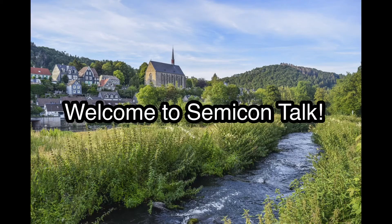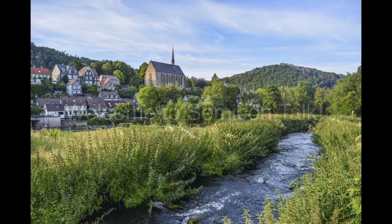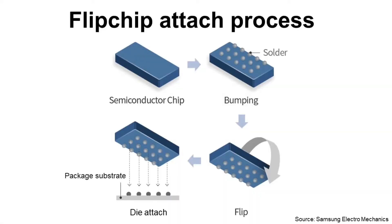Hello everyone, welcome to SemiconTalk. Today let's talk about flip chip attach. Flip chip attach process is to attach die with bumps by flipping, and it is like combining die attach and wire bonding process.